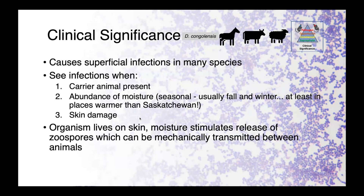Dermatophilus congolensis causes superficial infections in many species. As a general model for this disease, we see infections when we have a carrier animal present — oftentimes a subclinical carrier that you may not know is colonized with this organism — when we have an abundance of moisture. There is a seasonality to Dermatophilus congolensis infections, and you need to be aware of your local climate and when the animals are going to be exposed to these wet conditions.